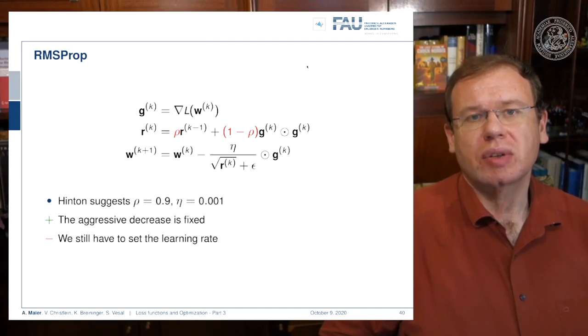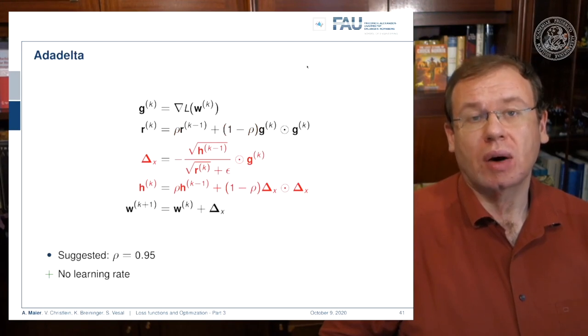This leads to the aggressive decrease being fixed, but we still have to set the learning rate. If you don't set the learning rate appropriately you run into a problem. Now AdaDelta tries to improve on this further.